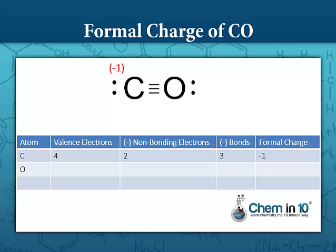Looking at oxygen, oxygen brings to the table six valence electrons minus two non-bonding electrons and also minus three bonds. It has a plus one charge.